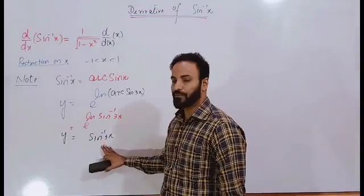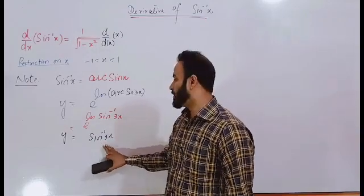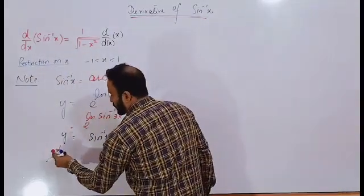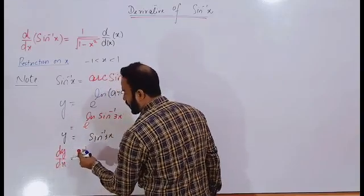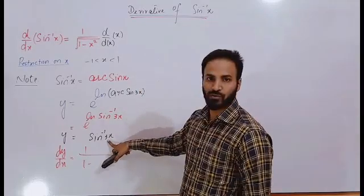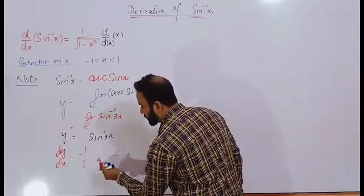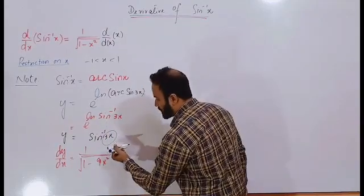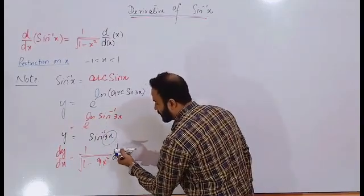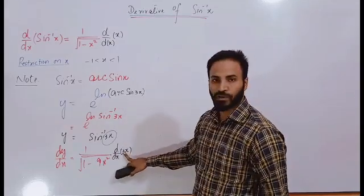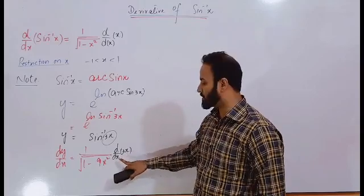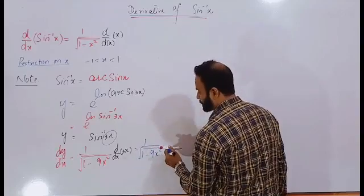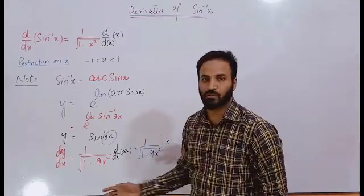Students, you just take the derivative of this quantity. Using the formula for the derivative of sine inverse x, the derivative will be 1 over the square root of 1 minus the square of the term 3x, that is 9x squared. The derivative of the inner term 3x: since 3 is a constant it comes outside, and the derivative of x with respect to x is 1. So the answer is 3 over the square root of 1 minus 9x squared.